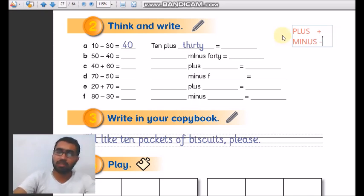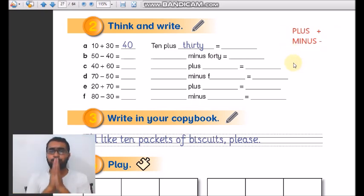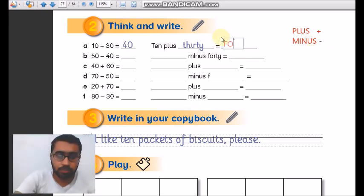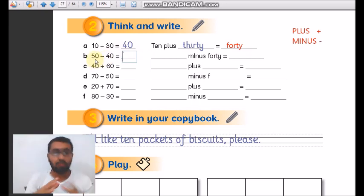When I read the first expression: 10 plus 30 equal. The equal sign means equal. 40. I'll write them: 10, which is here, plus 30 equals 40. I'll write the number 40 and the word forty.